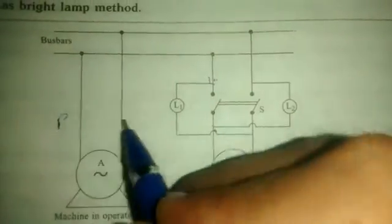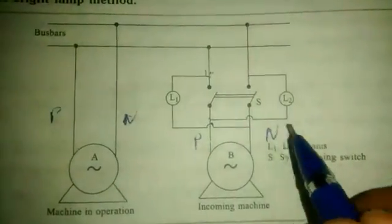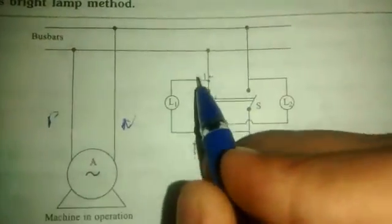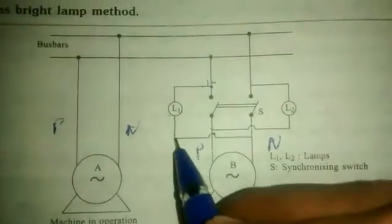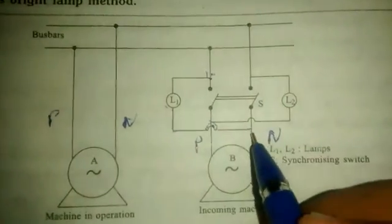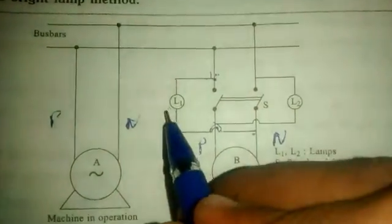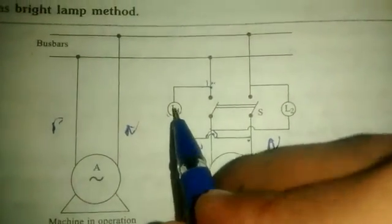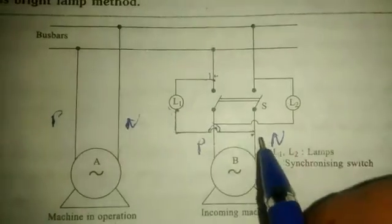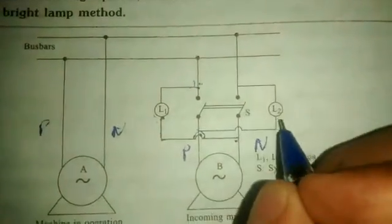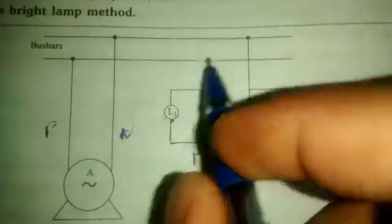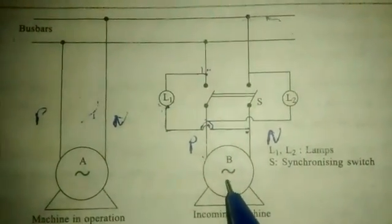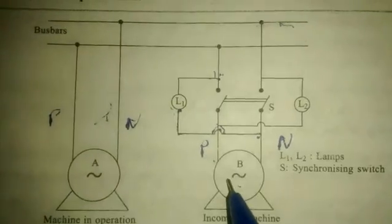This phase is neutral. This phase is neutral. This phase is neutral. This phase has a reverse voltage from the other side — the phase is not the same. After this, it becomes the same.